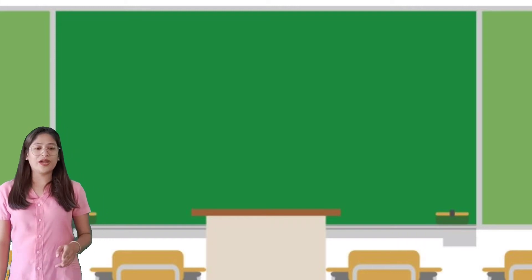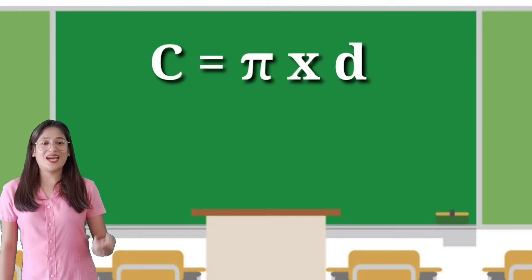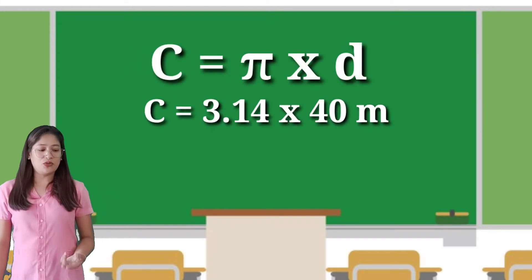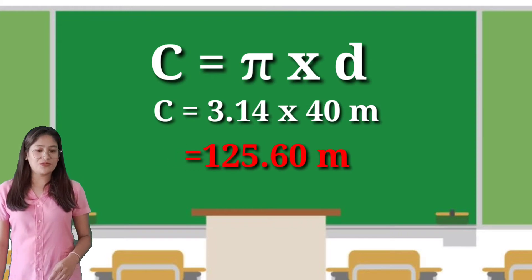For the circumference, we will use the formula pi times diameter.